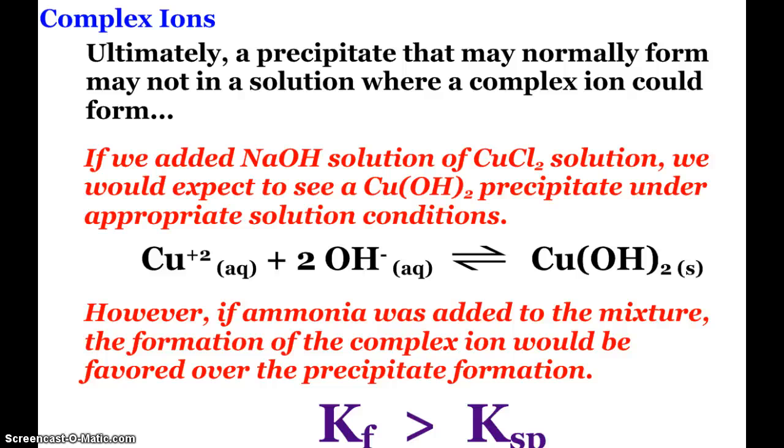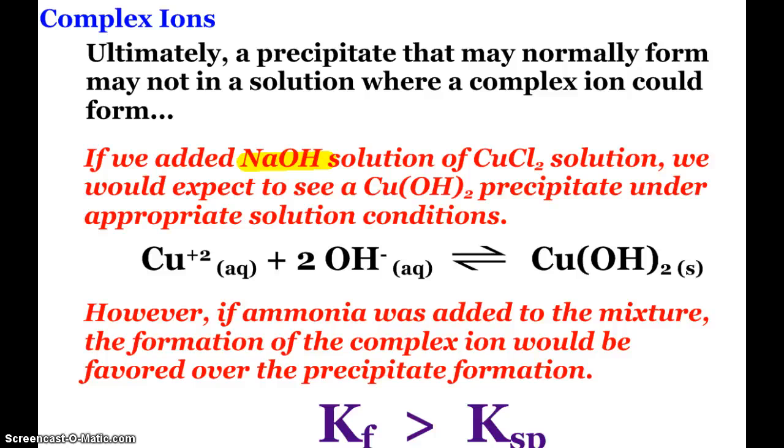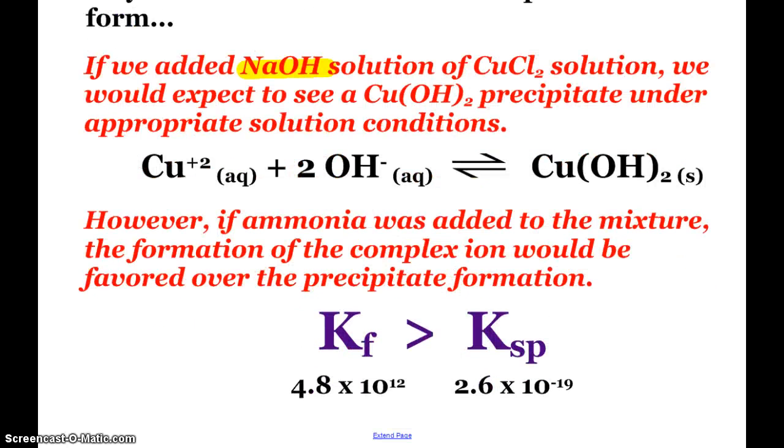So ultimately though what we should know is that a precipitate that would normally form may not do so in a solution where a complex ion could form. Here's another little typo. I think you had an ACL there. But if we add sodium hydroxide to copper chloride solution we would expect a copper hydroxide precipitate to form under specific solution conditions appropriate ones. And that's what we would see. However if we added ammonia to this mixture the formation of the complex ion would be much more favored over the precipitate formation. And that's what we saw in lab. Once there was enough ammonia that precipitate went away.